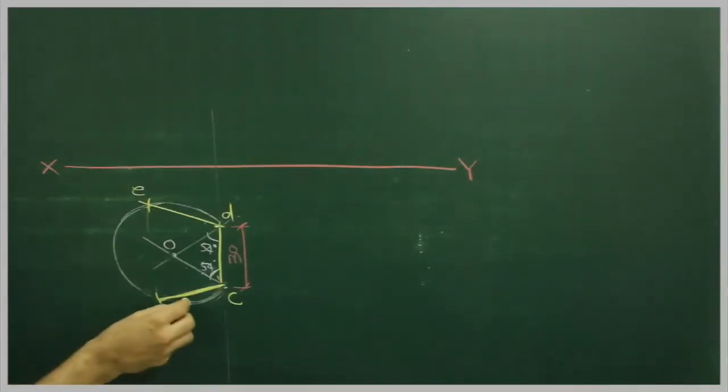After that we take C D again. From B we will cut on this side and from D we will cut on this side. So then you will get point A. So we got the required pentagon.